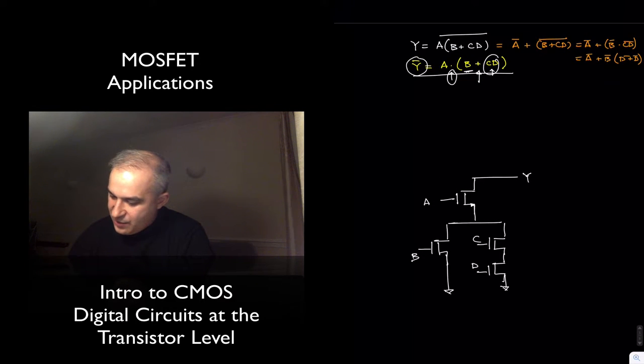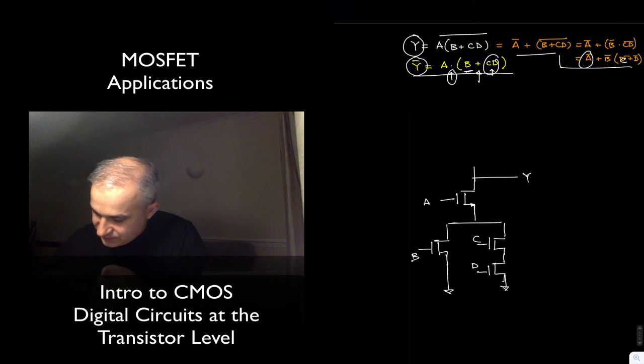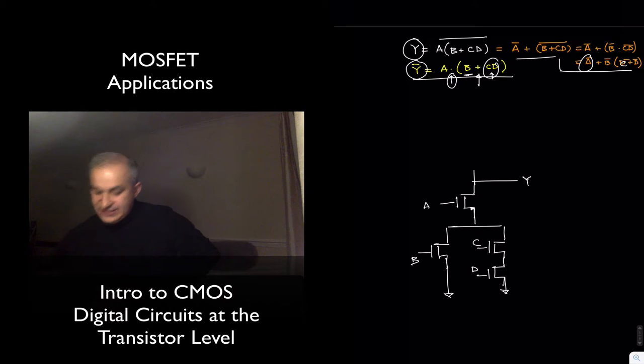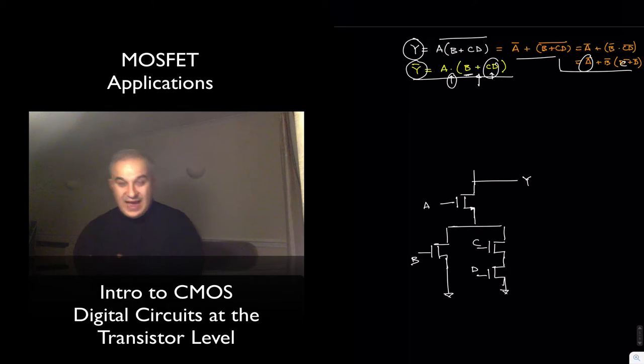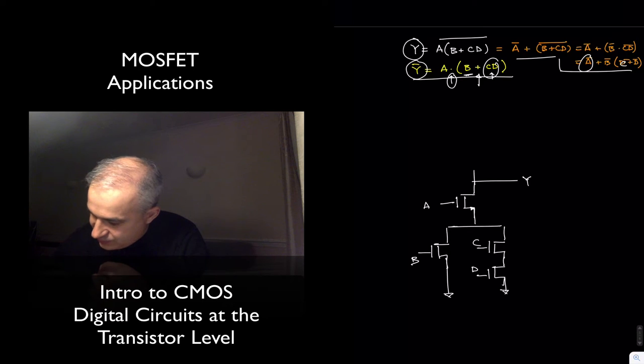So let's create now the pull-up network, meaning when are we going to have a logical one? And this is the reason why I did this Boolean algebra here. Here, this is high when A is low, or B is low, and C or D are low. And so let's do it. A, and this is always going to be complementary. So if A was in series with B and CD, here A is going to be in parallel with, right? This is what you see there, with this OR.